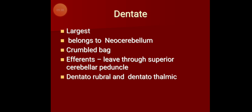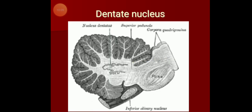To summarize the dentate nucleus: it is the largest, belongs to the neocerebellum, has a crumpled bag appearance, and its efferents leave through the superior cerebellar peduncle as dentatorubral and dentatothalamic fibers. In the cut sections, you can appreciate the very peculiar shape of the dentate nucleus.